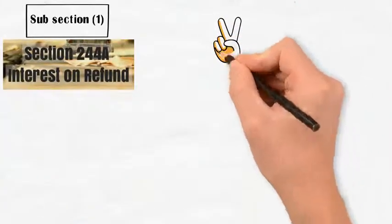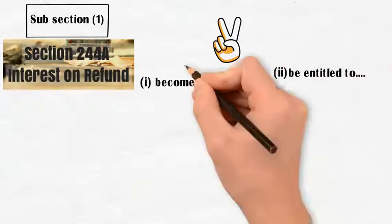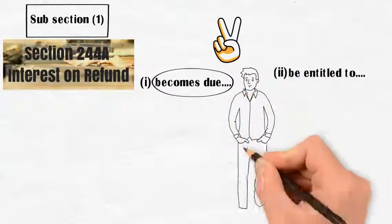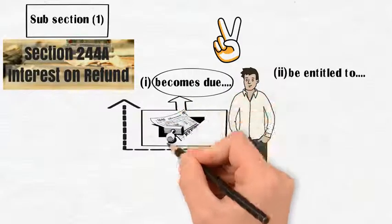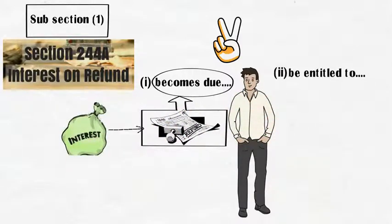Subsection 1 of section 244A uses two important expressions, namely: first, becomes due, and to be entitled to. The expression becomes due is a clear indication that an assessee will be entitled to the benefit of section 244A only if the refund has become due. Interest on the refund is also automatic, subject to the satisfaction of other conditions.